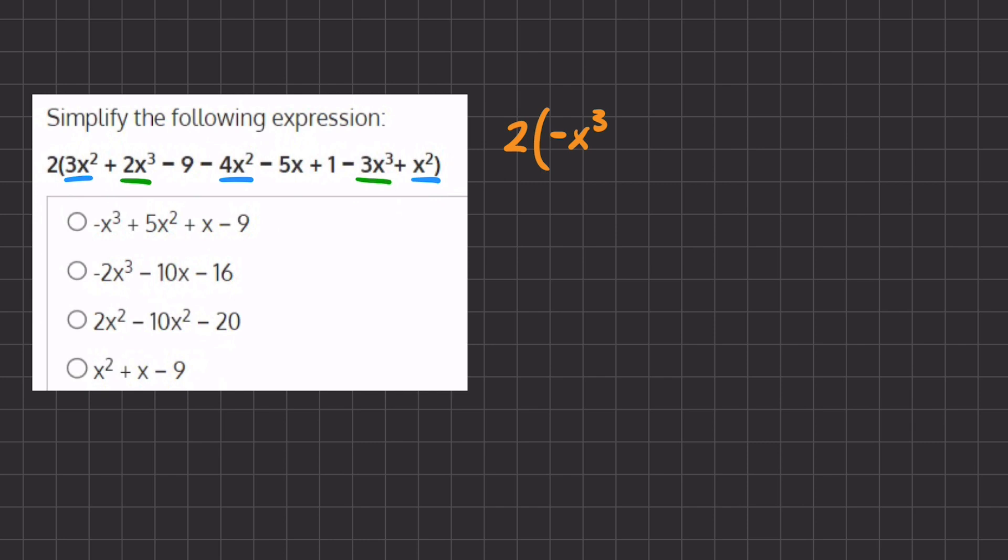Our next like term will be x to the power of 1. So that will just be this negative 5x, and we will write it right over here.